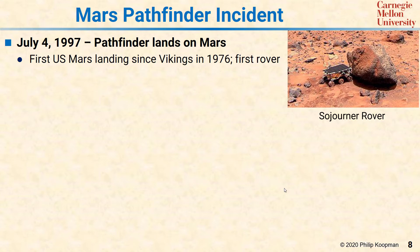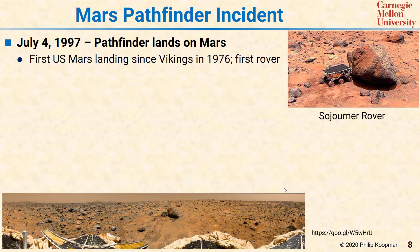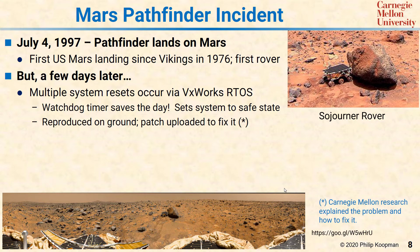After the lander took some great pictures — and you can see the rover there up against a rock — they had rover failures. Multiple system resets occurred via the VxWorks operating system. The watchdog timer was set properly and it saved the day by resetting the system to a safe state. But because of the time delay with Mars and the way the mission was run, every time there was a system reset, you would lose hours and hours of mission time. You only get so many days on Mars due to dust buildup on the solar cells, so every reset was a huge problem — it lost a significant chunk of the mission.